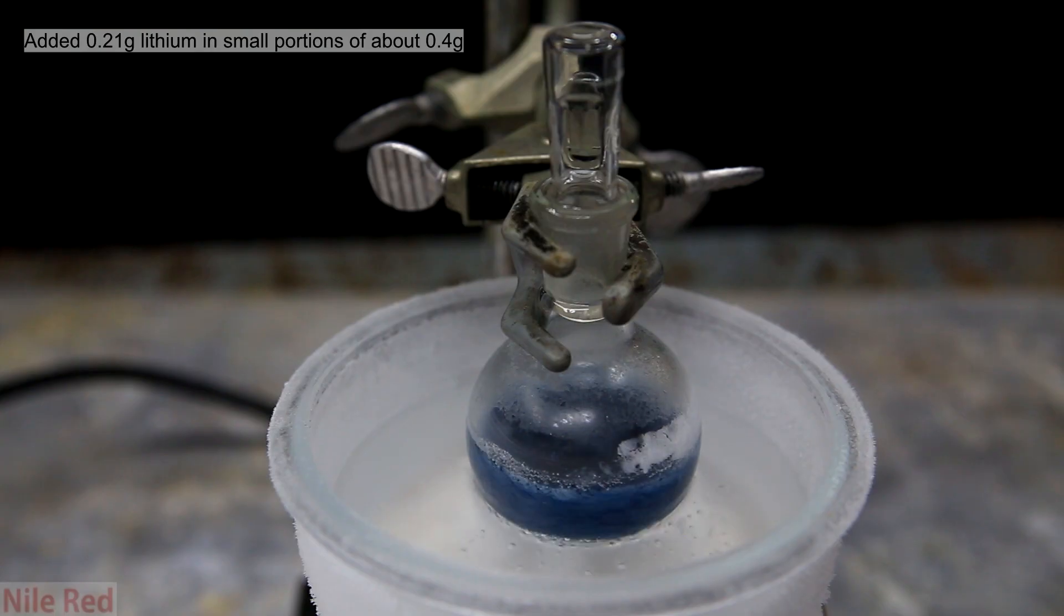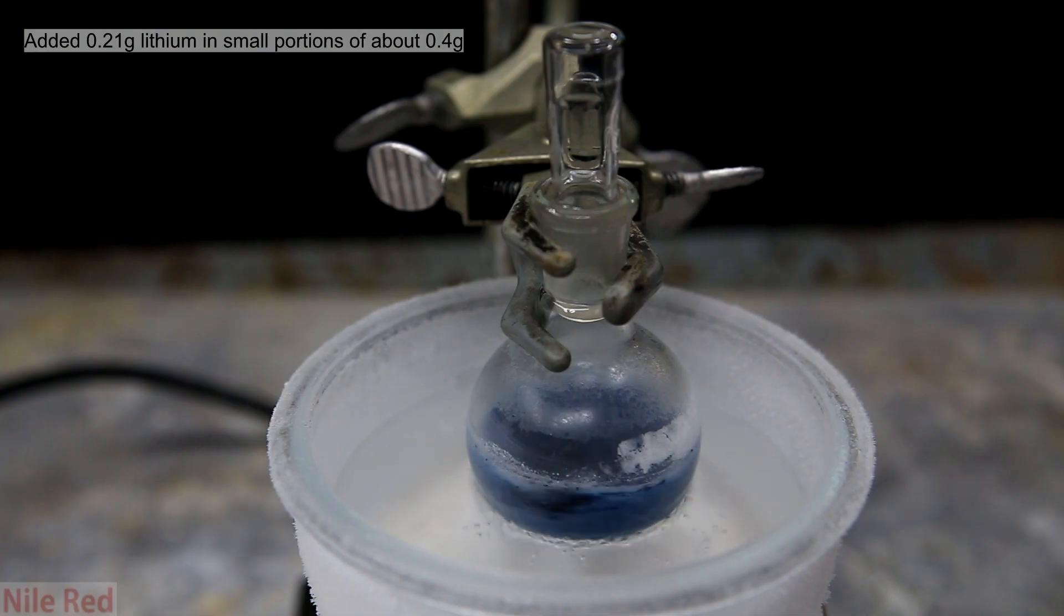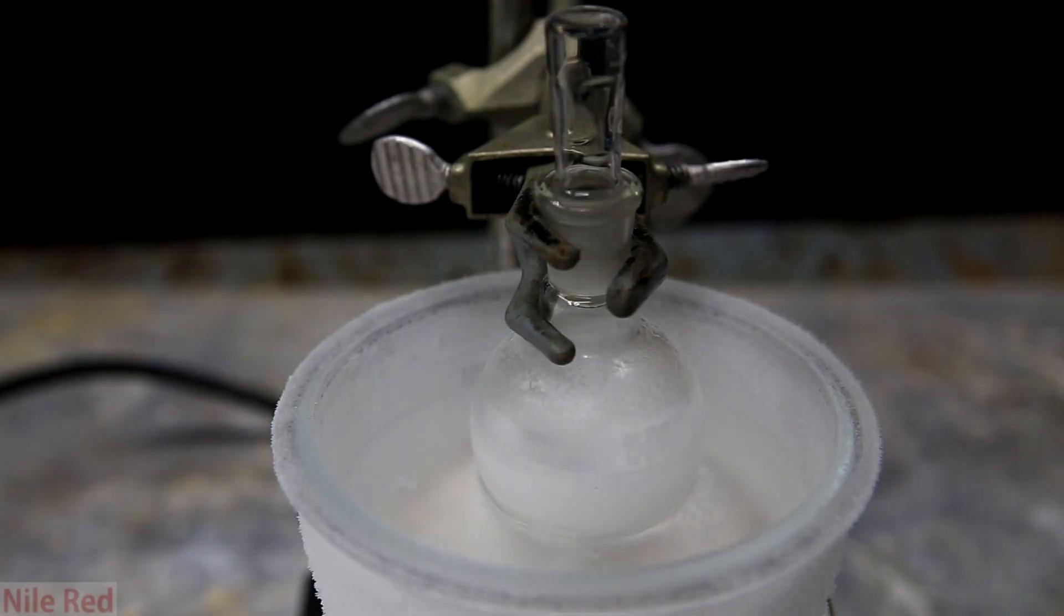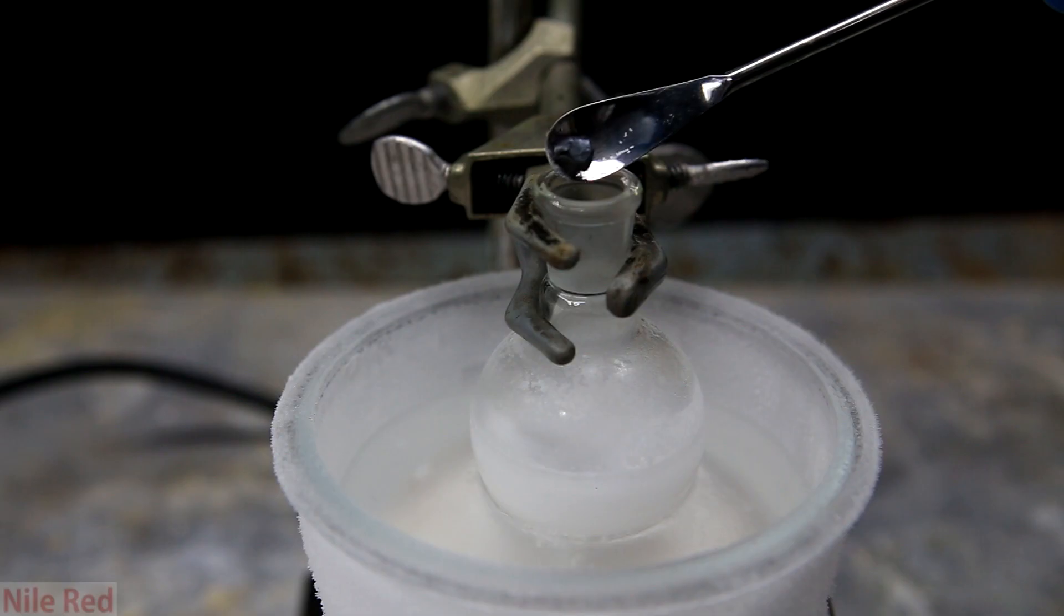Without going into any real detail, the color is due to solvated electrons when the lithium dissolves into the ammonia. The blue color will slowly fade until it becomes white again.